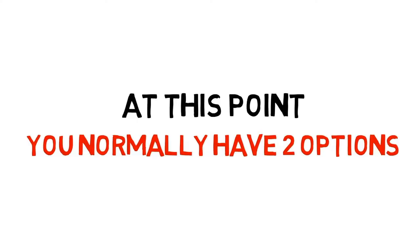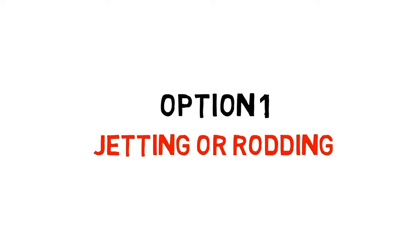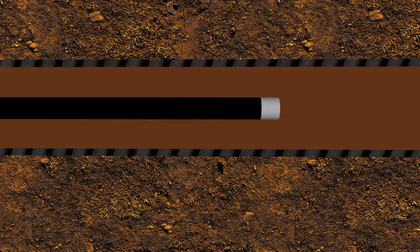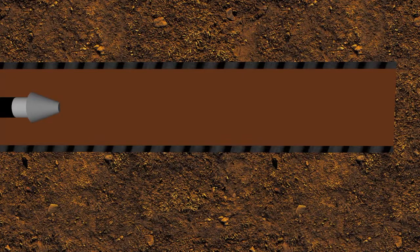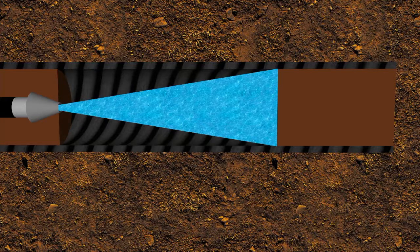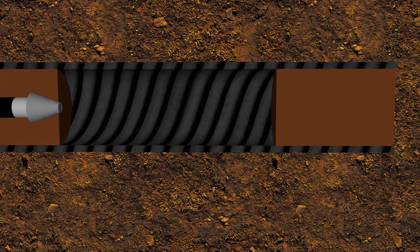At this point you normally have two options. Option one: jetting or rodding. Sometimes if debris such as sanitary towels or baby wipes get stuck in a pipe, rods are great for dislodging it — but because fat, grease, and sludge are semi-liquid, the drainage rod will just poke straight through, making it impossible to unblock the pipes this way. The other popular method is jetting, where high-powered water is blasted into the soak away. Again, this sounds like a good idea but in reality does more harm than good, because the fat, grease, and sludge just get compressed, making the original problem even worse.